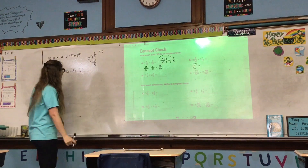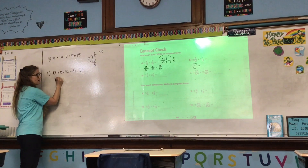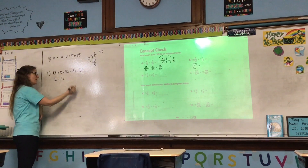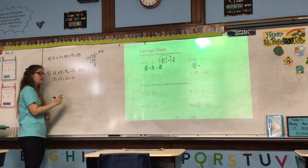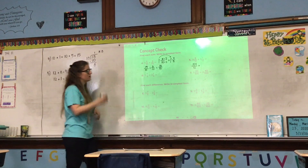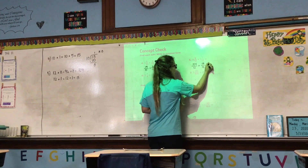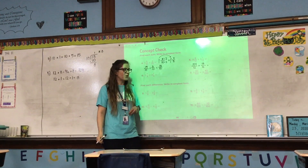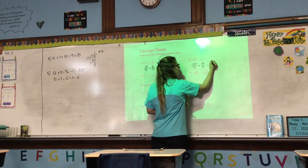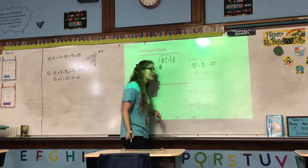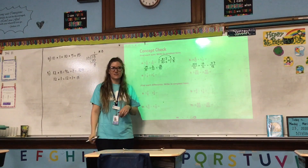Now we have to change 1 and 1 twelfth into an improper fraction. Start with the denominator, multiply it by the whole number: 12 times 1 is 12. Add the numerator: 12 plus 1 is 13. So our new numerator is 13 and the denominator stays the same. Now remember the steps for adding like fractions. Step 1: add the numerators — 104 plus 13 is 117. Step 2: the denominator stays the same. So we have 117 twelfths.